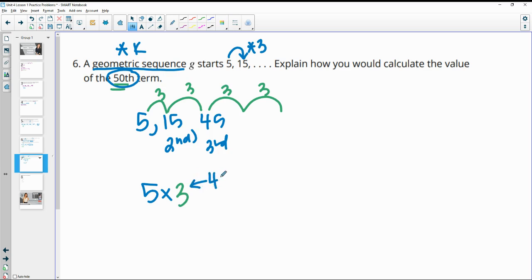Okay, so we're going to multiply by 3 49 times, because it's 1 less than the term number. So we multiplied by 3 to get the second term, 3 again to get the third term, 3 again to get the fourth term. So 1 less. So multiply 5 times 3 49 times.